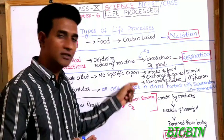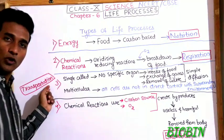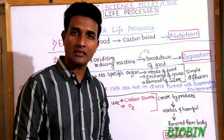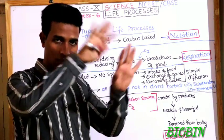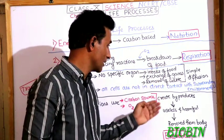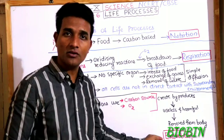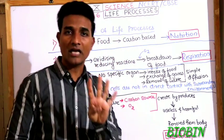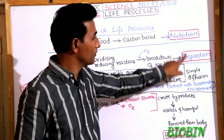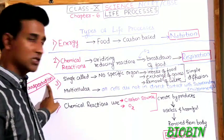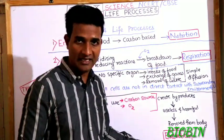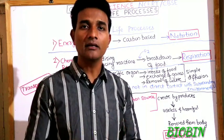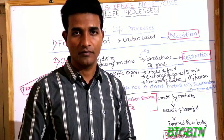Nutrition is the mode of obtaining food. Respiration is where energy is released and exchange of gases takes place. Transportation is where the food taken inside is supplied to all parts of the body. Excretion is where waste is removed. These four important life processes — nutrition, respiration, transportation, and excretion — will be discussed in detail in future videos. Thank you.